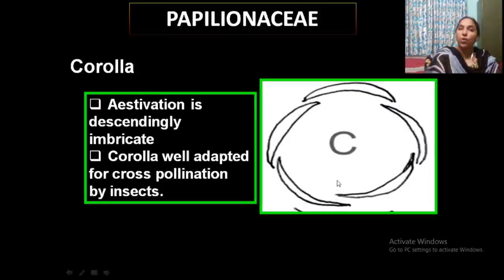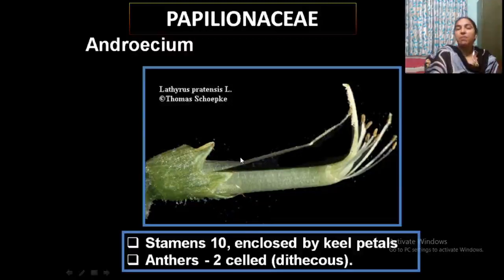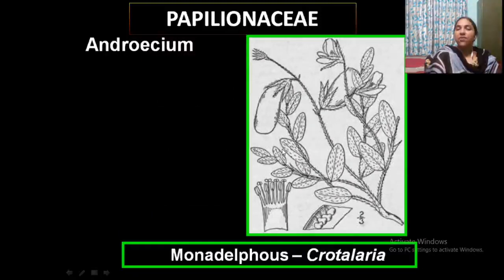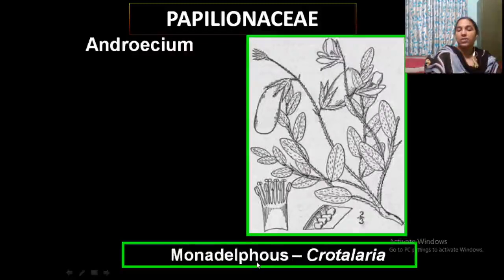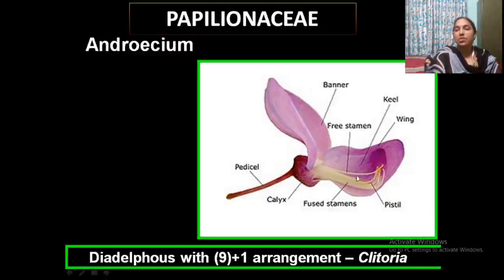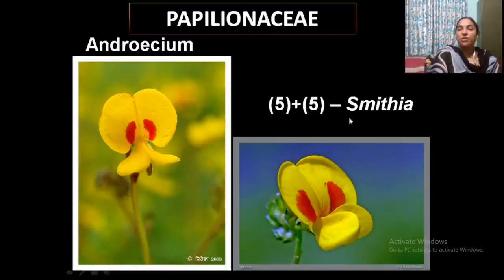This corolla is well adapted for cross-pollination by insects. Aestivation is descendingly imbricate. Stamens are united in different ways — usually 10 stamens, enclosed inside the keel petal, with two-celled anthers. In Crotalaria, stamens are monadelphous — all filaments united into one bundle. In Clitoria, there are two bundles: nine stamens united and one free, i.e., diadelphous (nine plus one). In Smithia, a five plus five arrangement is observed.